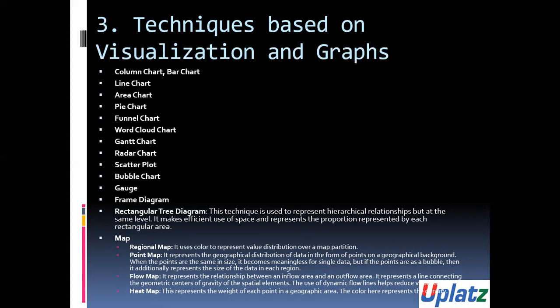Then we have pie chart. It is used to represent the proportion of different classifications. It is only suitable for one series of data. However, it can be made multi-layered. Then we have funnel chart, word cloud chart, and Gantt chart, which shows the actual timing and progress of activity in comparison to the requirements. Then we have radar chart, used to compare multiple quantized variables. It represents which variables in the data have higher values and which have lower values.